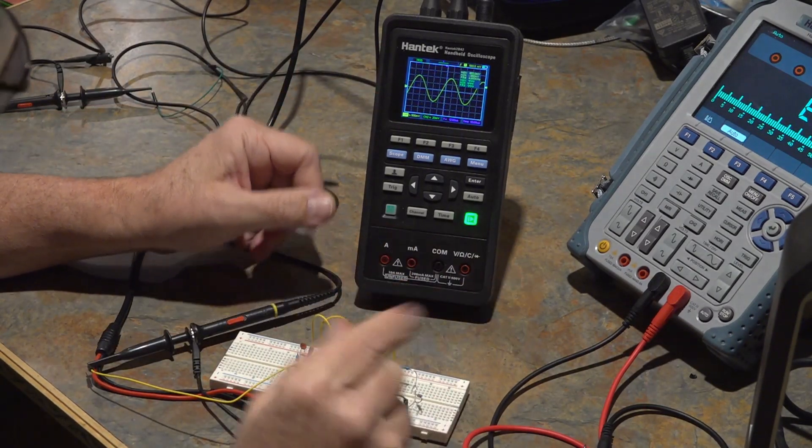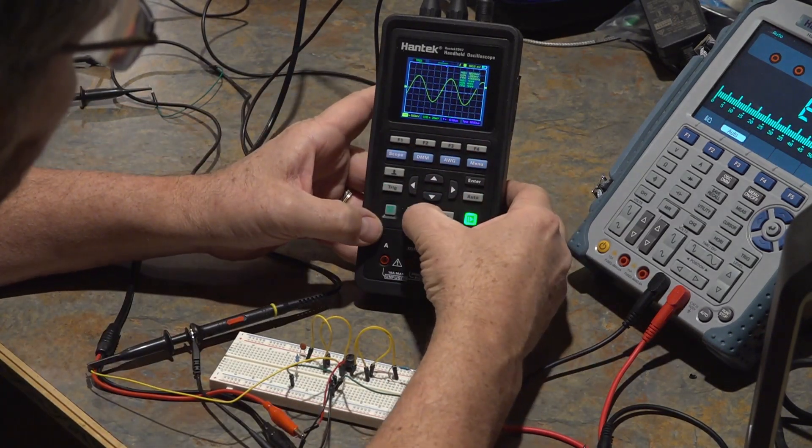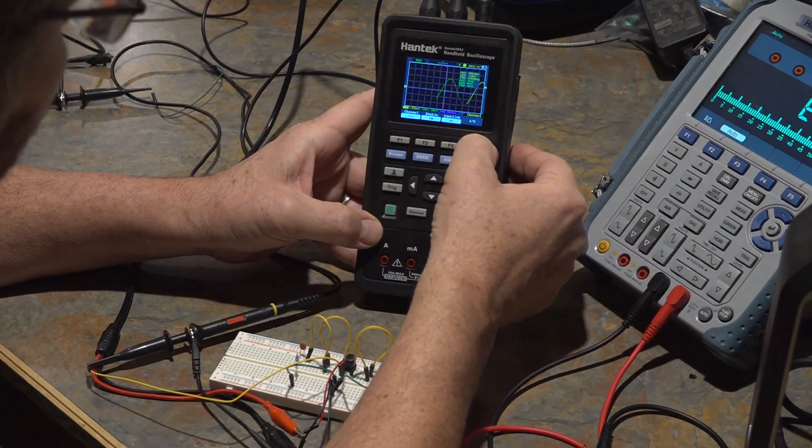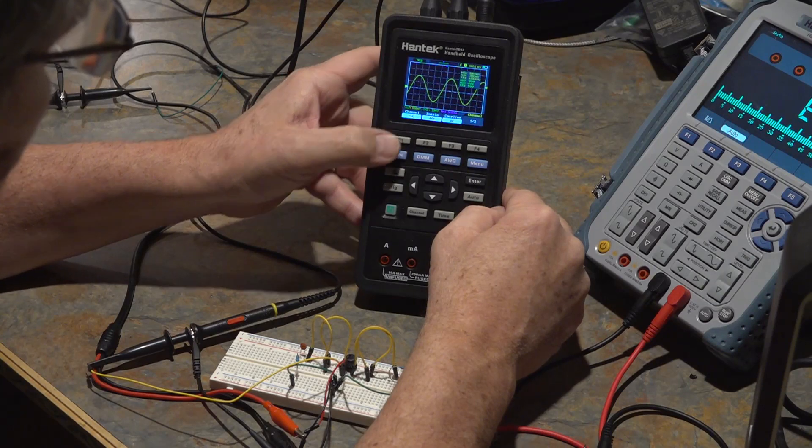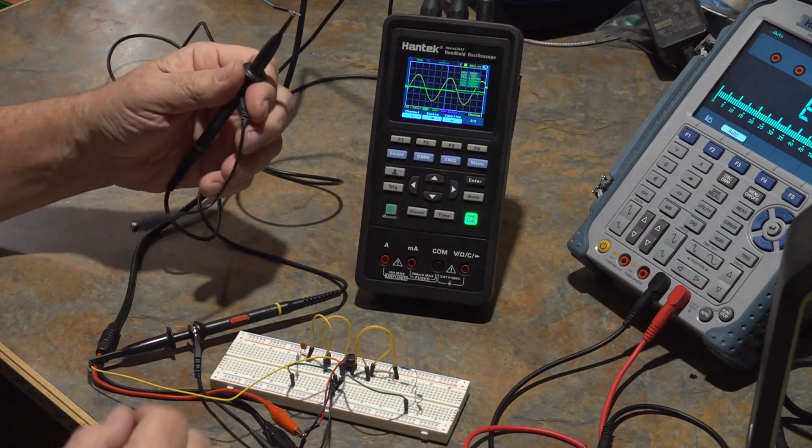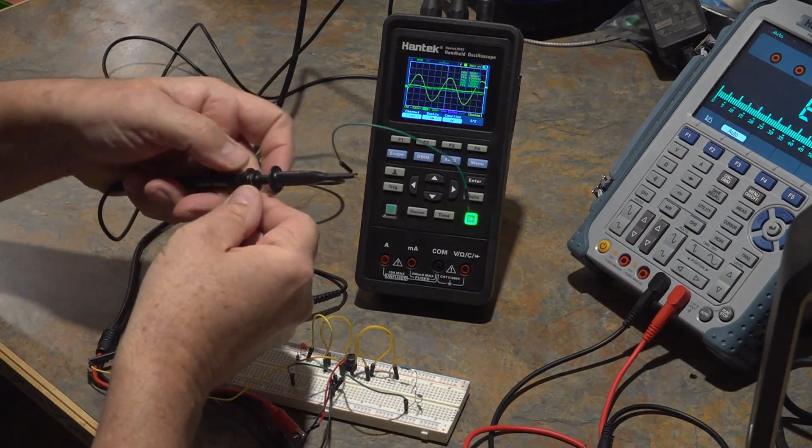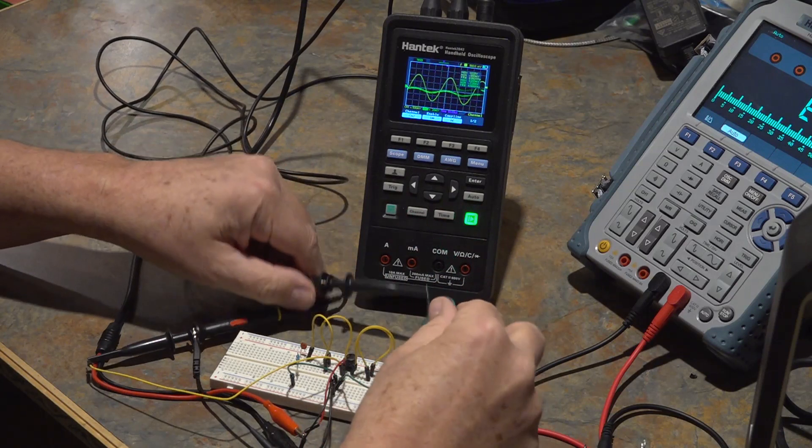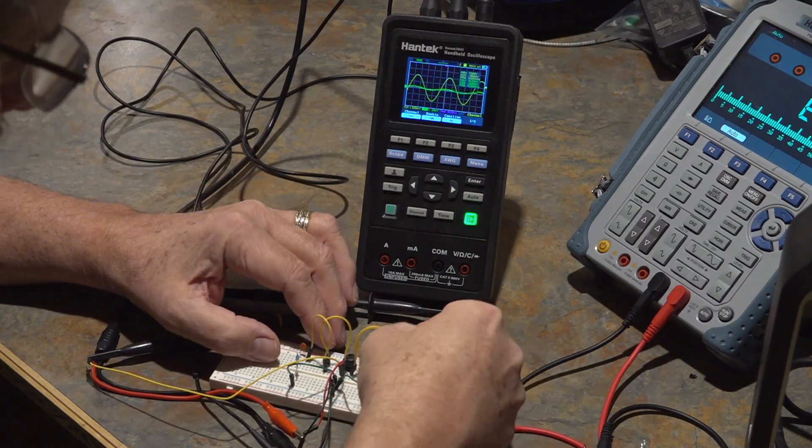There's the output of the function generator, 2 volts peak to peak, and then I'm going to hardwire that into the board. That's now going to be my reference for the two voltage measurements that I'm going to be taking. Now let's go over to channel two. Set this one up the same way, AC coupled.